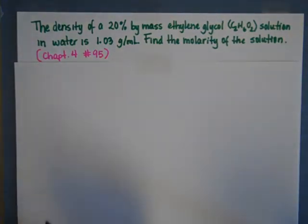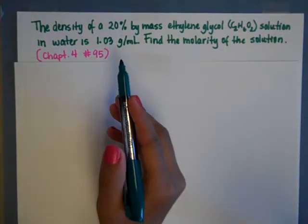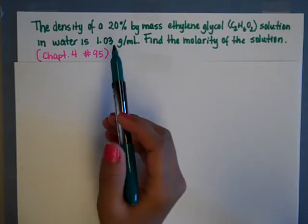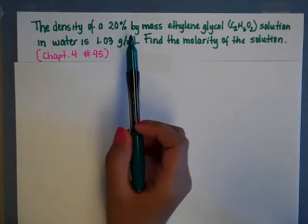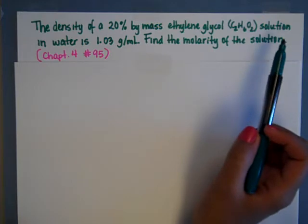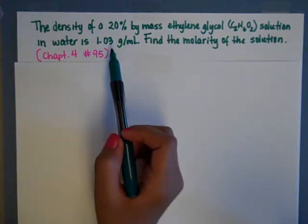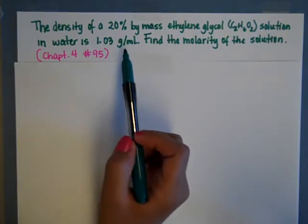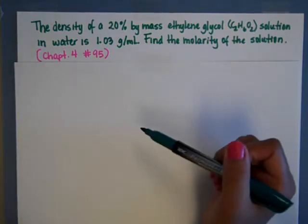So this one's a little bit more involved. It's number 95 in the back of the chapter for problems. And it starts with a density of 20% by mass ethylene glycol solution, and it gives you the density, 1.03 grams per milliliter. And it wants you to find the molarity.